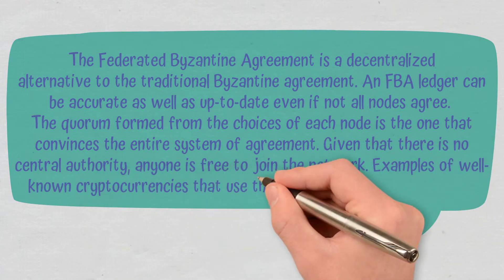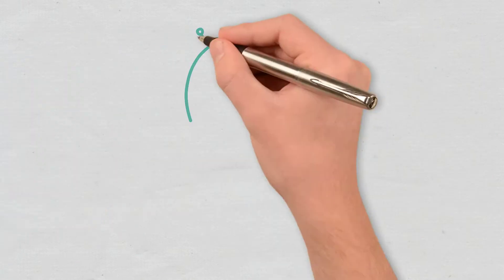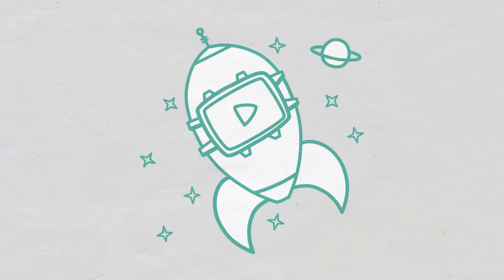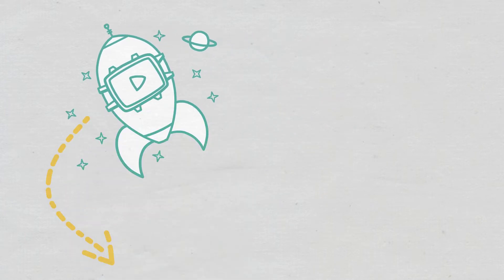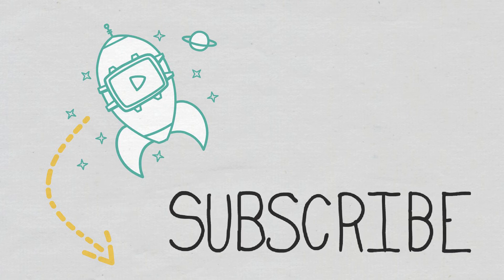Examples of well-known cryptocurrencies that use the FBA include Stellar and Ripple. I hope you enjoyed today's video, and if you have other questions about Federated Byzantine Agreement, don't hesitate to tell us in the comment section. So much for today, don't forget to subscribe to the Cryptomatics channel if you want to stay up-to-date with the latest concepts in the crypto sector.